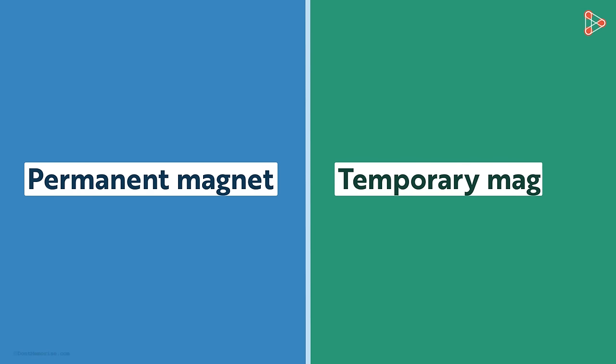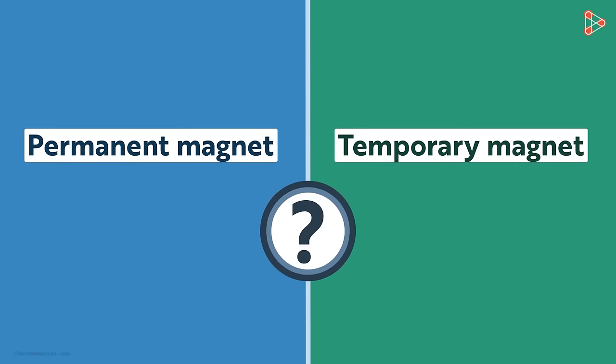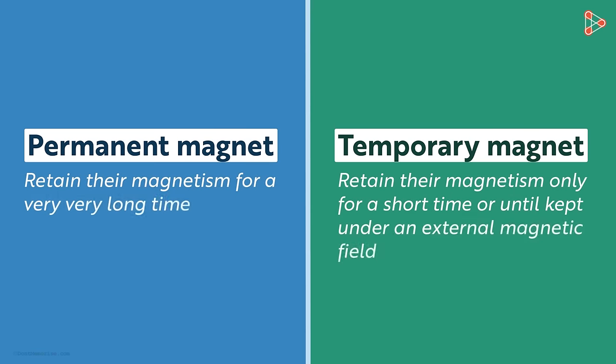We have studied the two types of magnets in our past videos: permanent magnets and temporary magnets. Do you remember them? This is how one can define them in simple words. Please take a moment and go through these definitions.